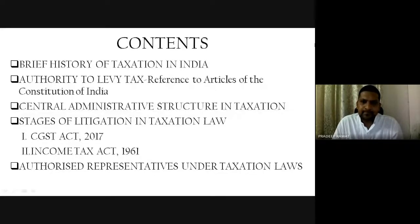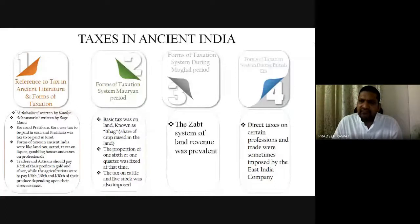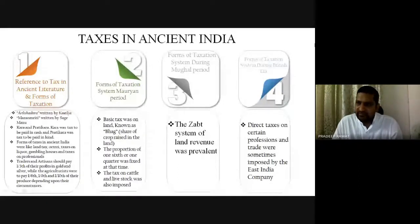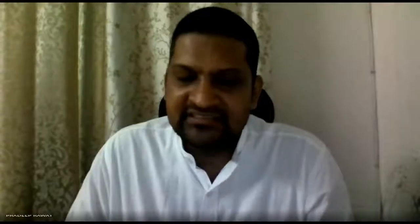Just a glance at what tax has been in ancient India. If you look at our ancient literature, you'll find references to tax in Arthashastra, written by Kautilya, and in Manu Smriti by sage Manu. You will find references to taxation — 'kar' and 'pratikar' as the two types of tax at that point in time. It had forms of octroi, land tax, taxes on liquor, gambling, trade and artisans in the form of one-fifth of their profits in gold.